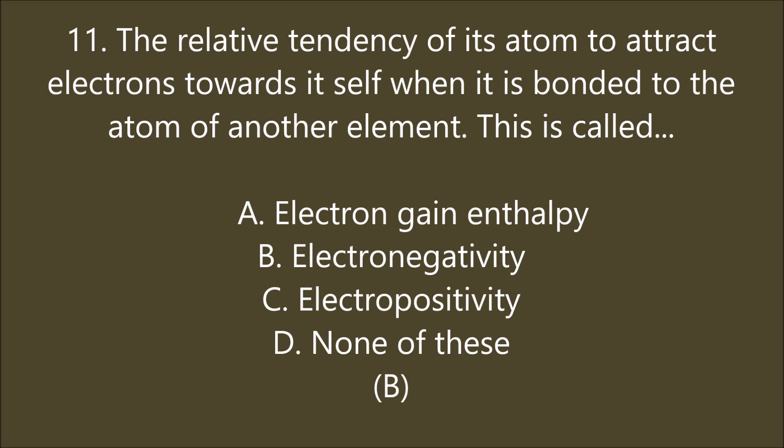The relative tendency of an atom to attract electrons towards itself when bonded to the atom of another element is called: electron gain enthalpy, electronegativity, electropositivity, or none of these. B is the right answer — electronegativity. Electronegativity decreases in groups from top to bottom, whereas it increases in a period from left to right. The most electronegative element is fluorine.